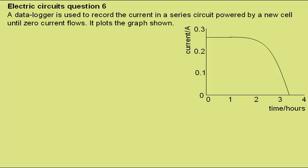Electric Circuits, Question 6. A data logger is used to record the current in a series circuit powered by a new cell until zero current flows. It plots the graph shown.